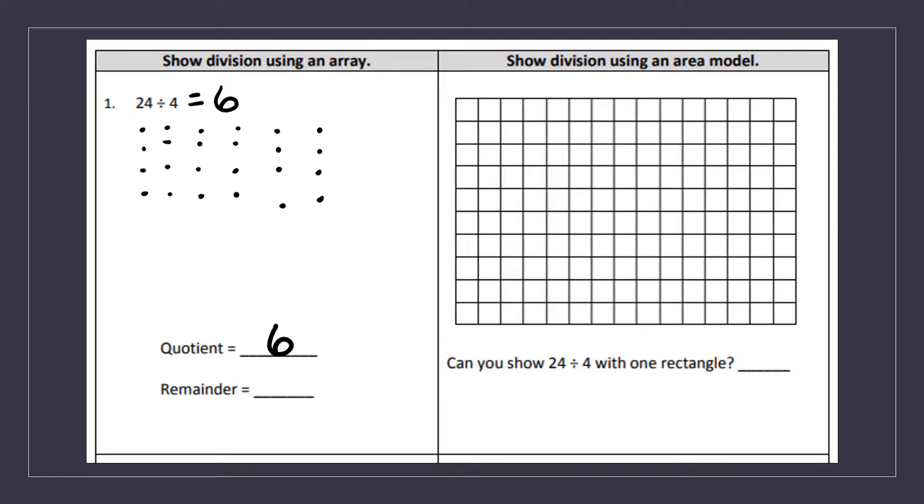I didn't have any leftovers. So I have zero remainder. So now I'm going to use the area model to demonstrate what I just did with the array. We should be able to get the same answer.